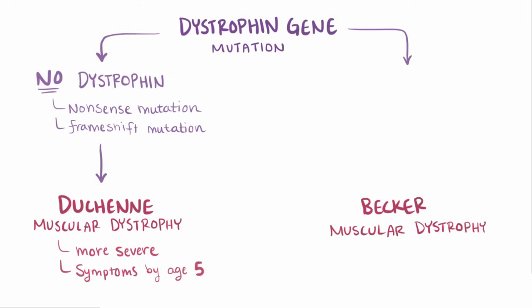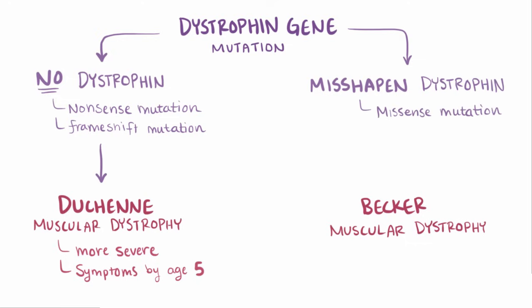On the other hand, mutations that allow for a misshapen protein to form, like missense mutations, lead to Becker muscular dystrophy, which is basically a milder form of Duchenne muscular dystrophy that presents later on, usually between ages 10 and 20.